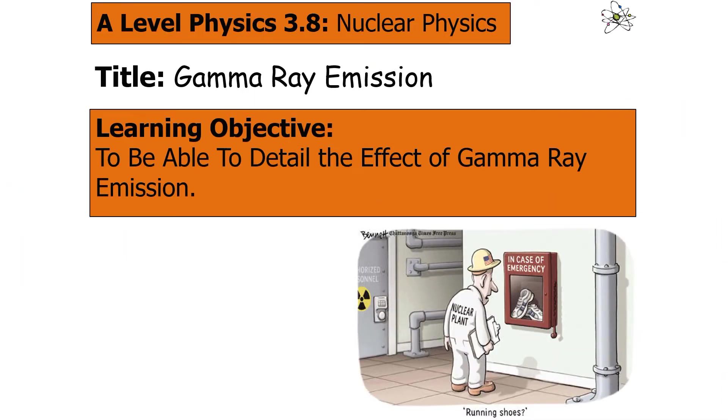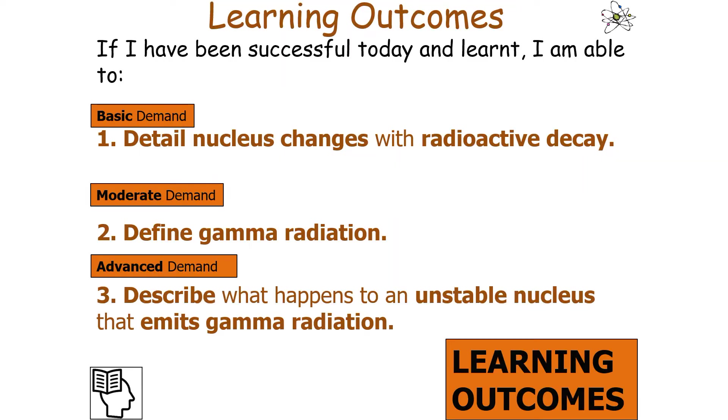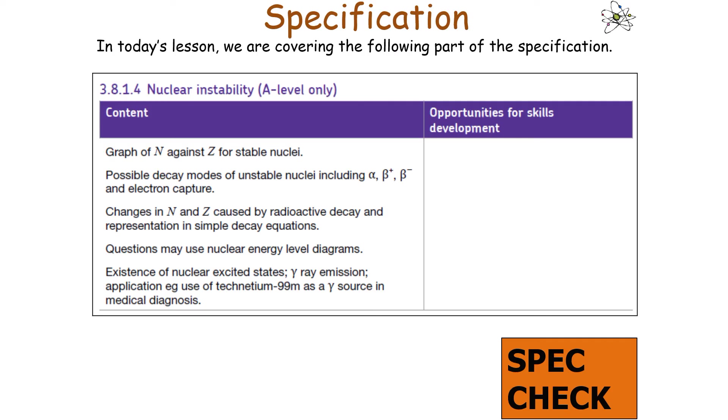In today's lesson we're going to detail the effect of gamma ray emission. If we've been successful and learnt, we should be able to detail how a nucleus changes with radioactive decay, define gamma radiation, and describe what happens to an unstable nucleus that emits gamma radiation.